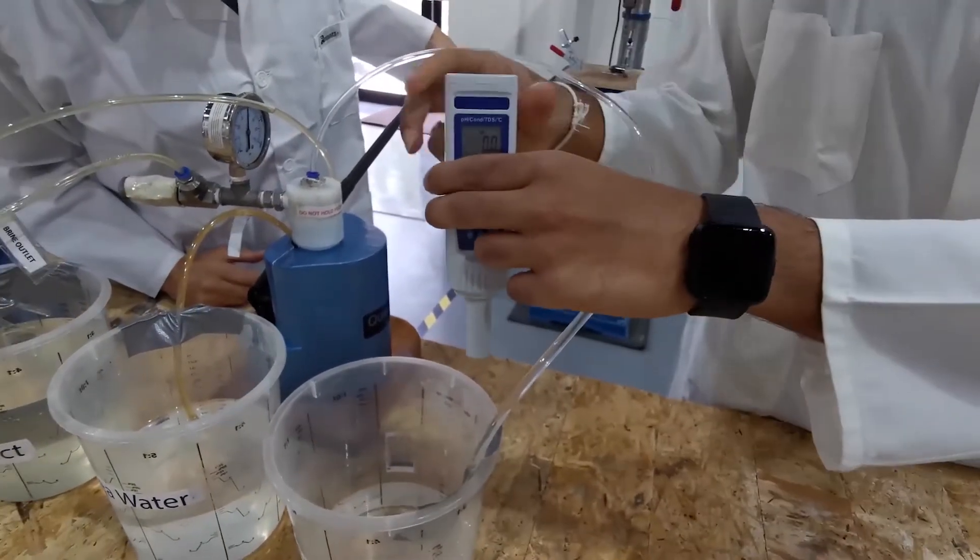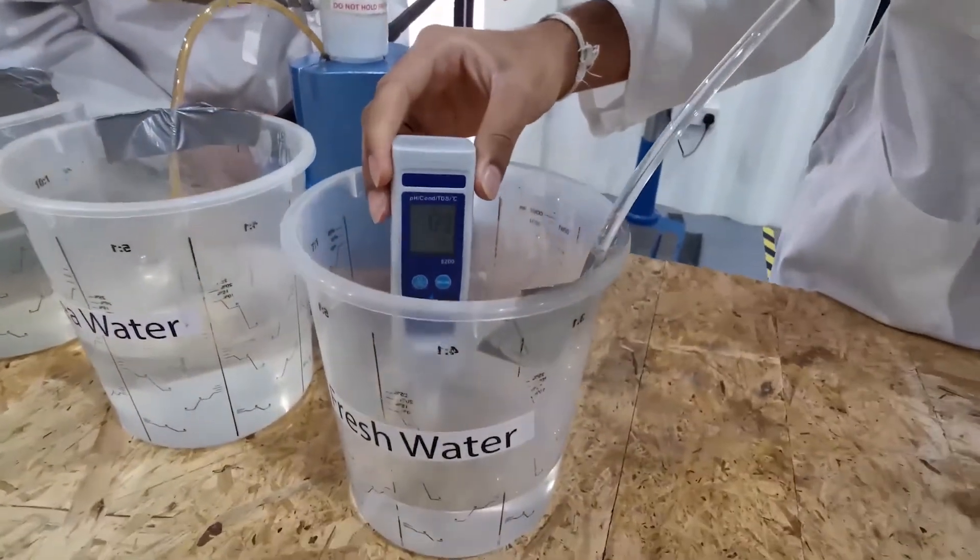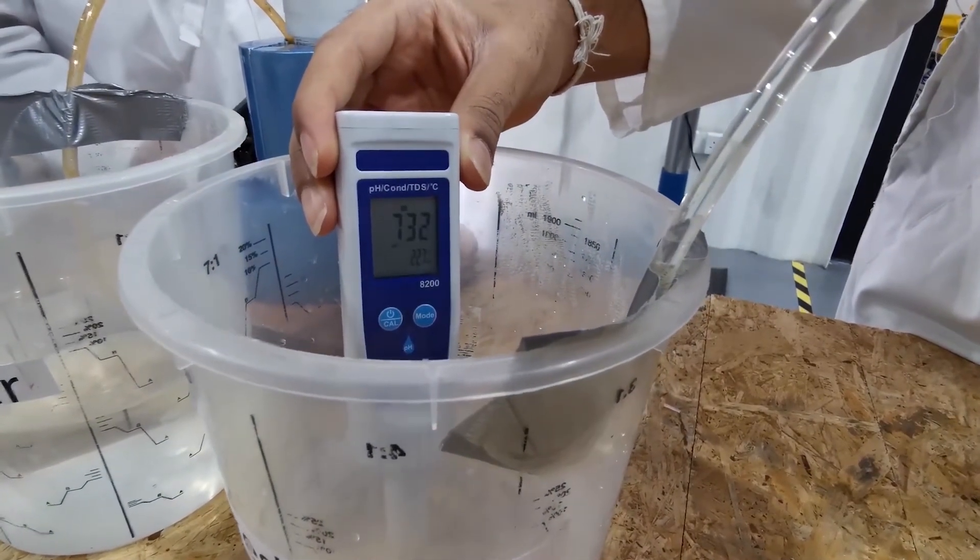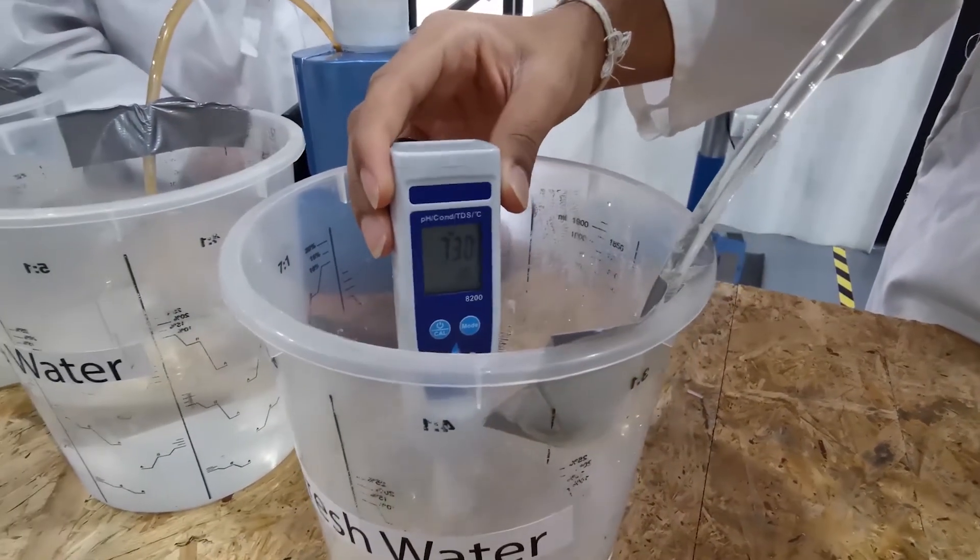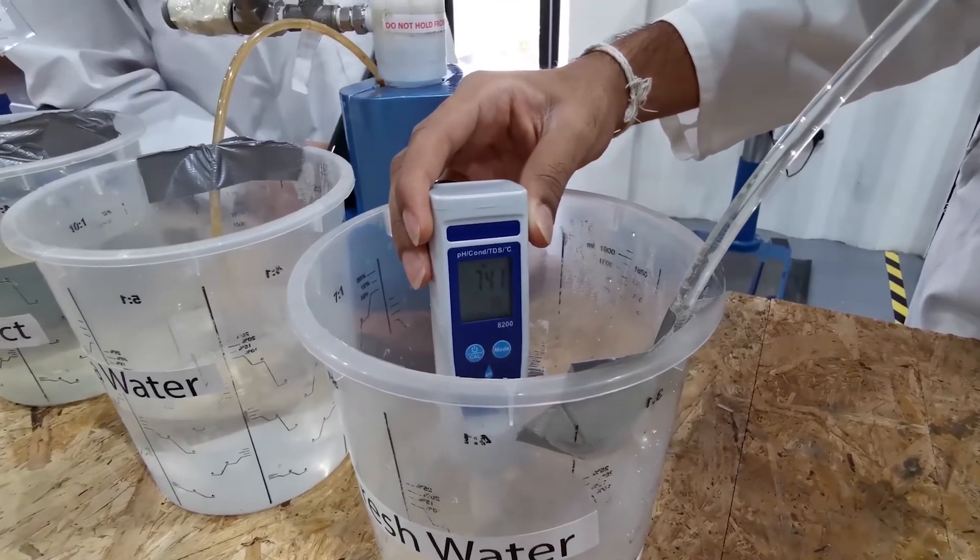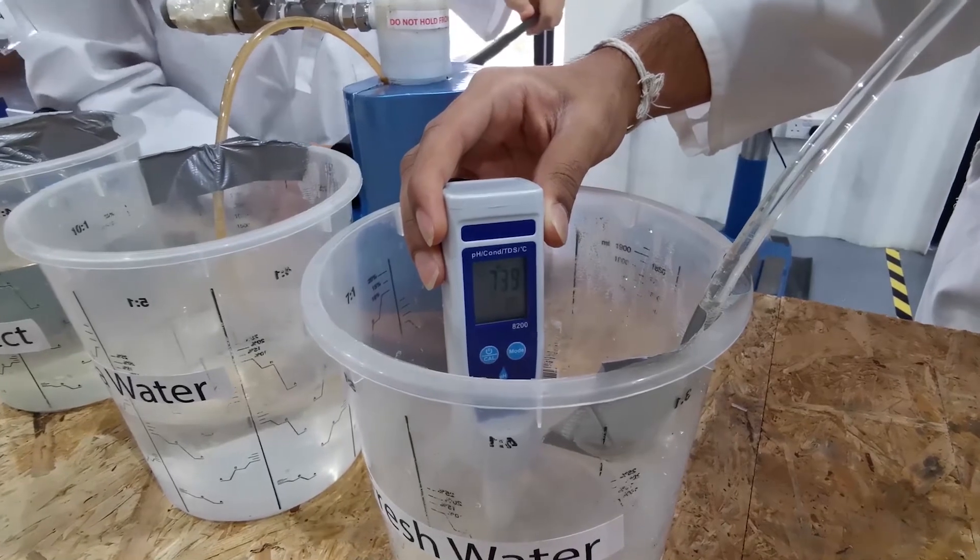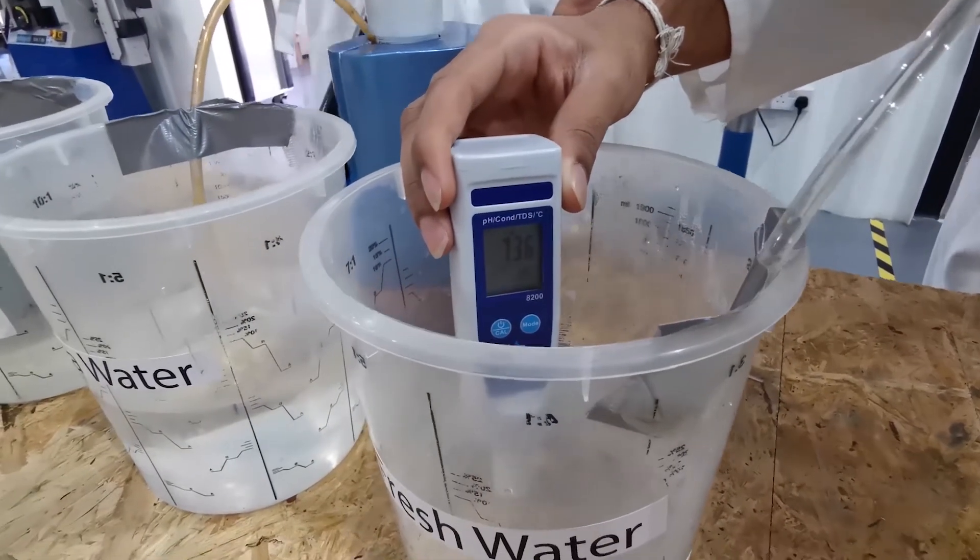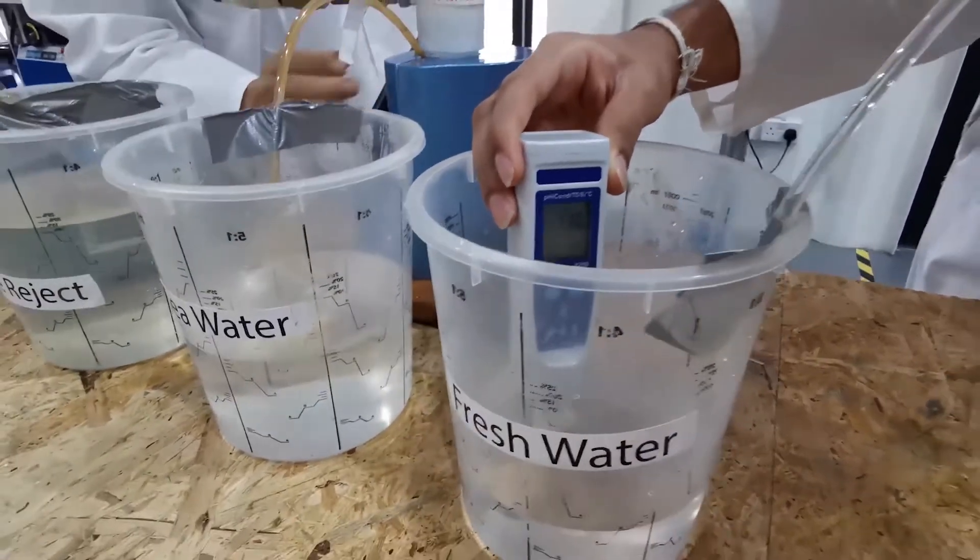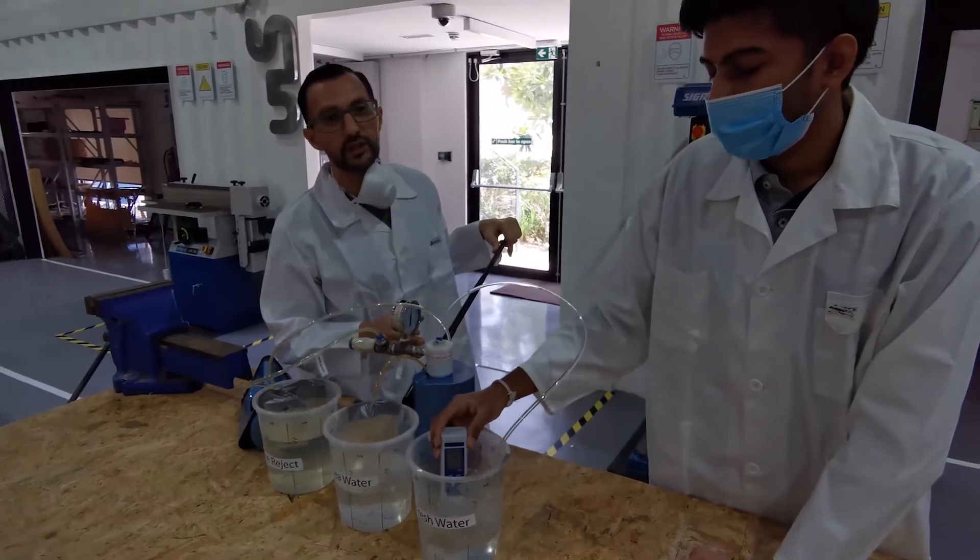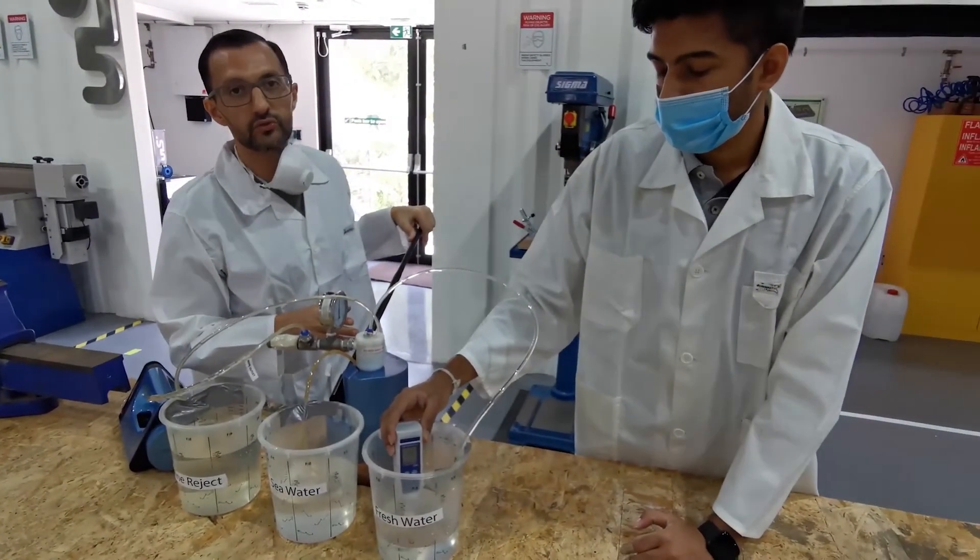And now we will be testing the fresh water. This is the desalinated water, so we put it in, let it stabilize for a couple of seconds, move it around a little bit, just shake it in. Perfect, what's it stabilizing? So now it's gone down from 39,000 to 730 TDS, total dissolved solids.